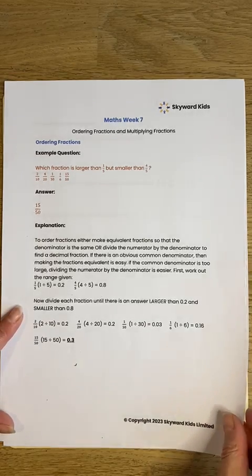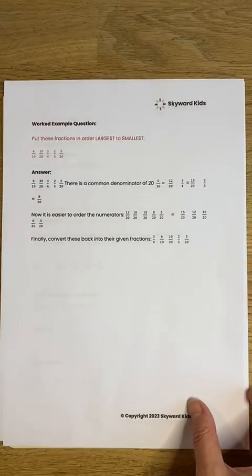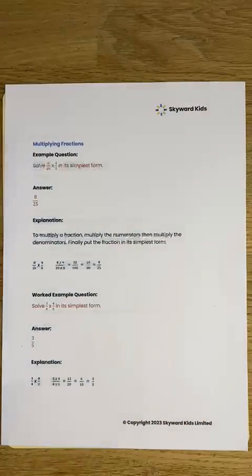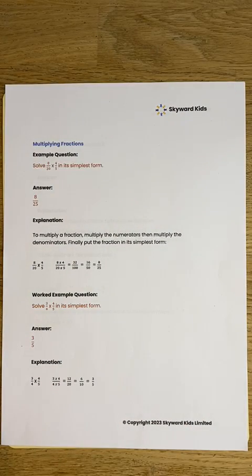We're going to go past ordering fractions, so past these two pages, and onto multiplying fractions. We're going to work through the first example in your lesson notes. It says, solve 8 twentieths times by 4 fifths in its simplest form.